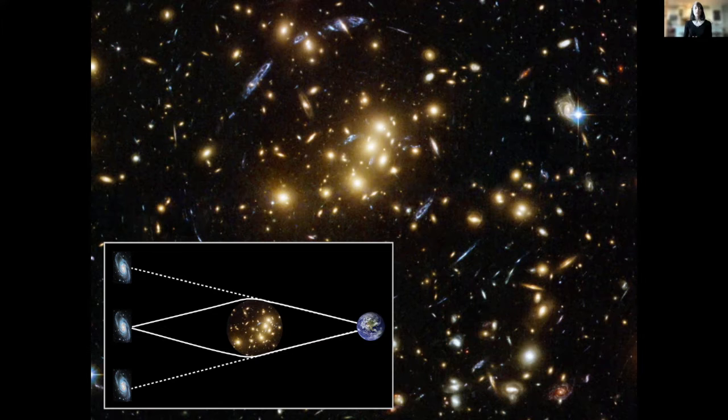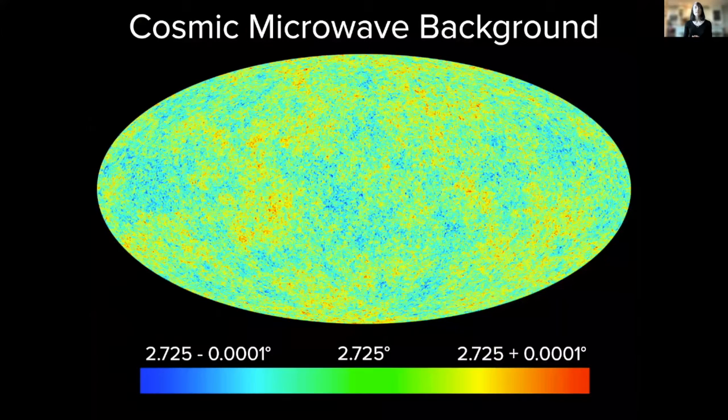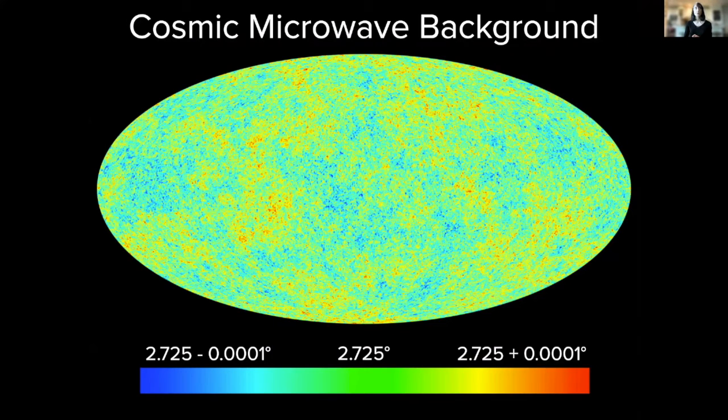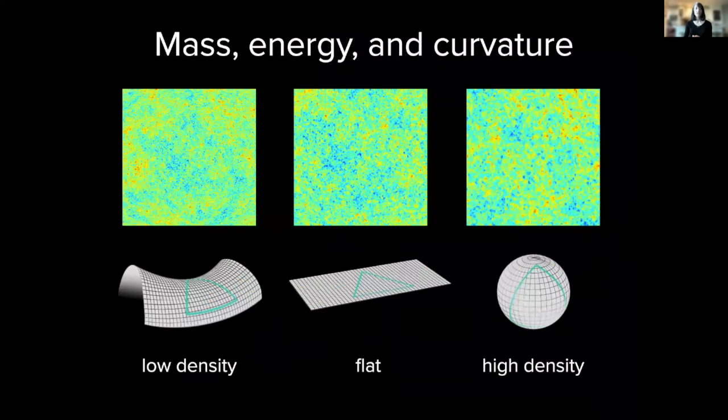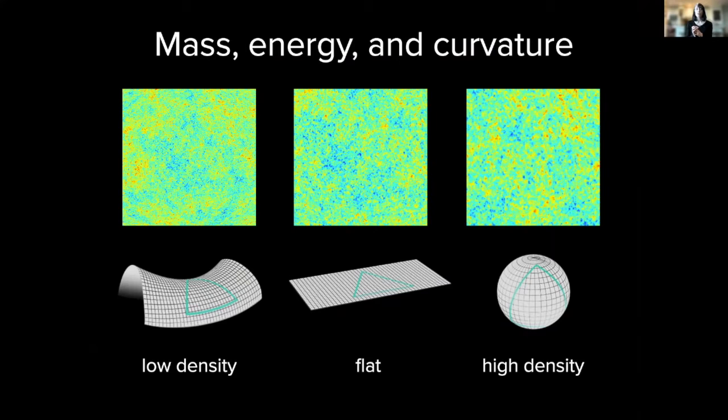And what that means is that the apparent size of these spots in the cosmic microwave background radiation depends on the curvature of the universe. As with the galaxy clusters, the curvature bends the paths of light.